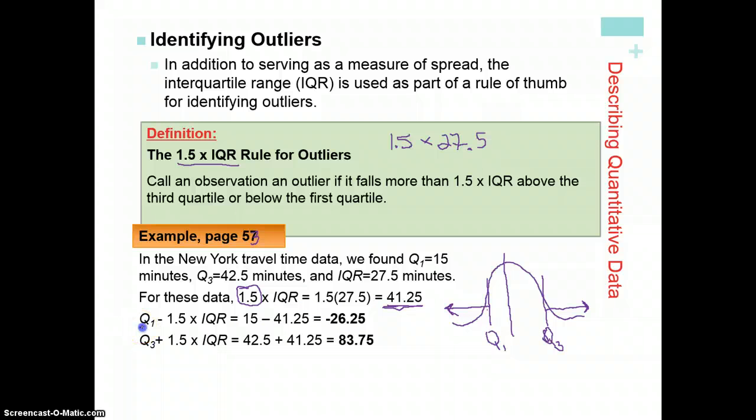Now let's look at this. So this was for our lower outliers, our lower bound outliers. First quartile which is 15 minus 41.25 is a negative number. And remember we're measuring commuting times. We can't have negative commuting times. You can't go back or you can't have negative minutes unless you have a DeLorean I guess, you're in Back to the Future. But Q3 plus 1.5, our upper bound outliers, 42.5 plus 41.25, we get 83.75.